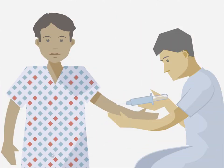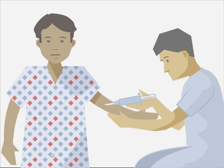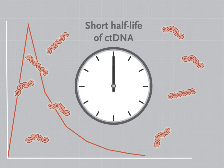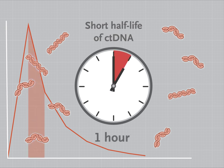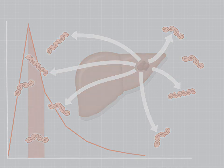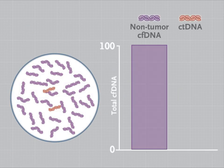ctDNA is typically obtained and detected from peripheral blood samples. Because of the short half-life of ctDNA, which is approximately one hour, and the possible range in the amount of DNA fragments released by tumors, the proportion of cell-free DNA that is made up of ctDNA can vary greatly from less than 0.1%